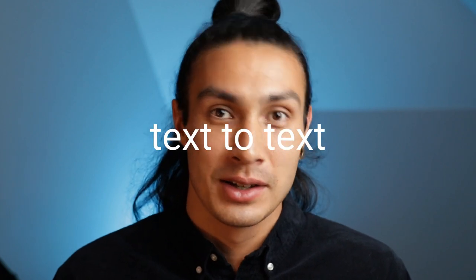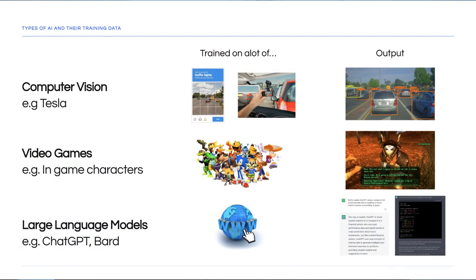You'll often hear terms like text-to-text, text-to-speech, or images-to-video. For example, a text-to-speech AI model means it was trained on text and outputs speech-like audio. Computer vision was popularized by self-driving cars. Teslas and other autonomous vehicles use computer vision to navigate roads safely. These AI models are trained on images and video to identify objects so that the car can alter its speed and direction.